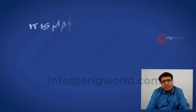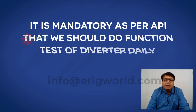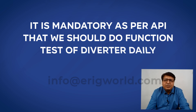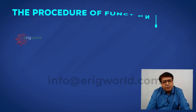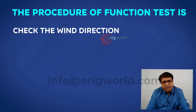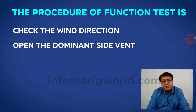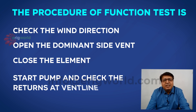It is mandatory as per API that we should function test the diverter daily. The procedure is: first, check the wind direction; then open the downwind side vent; close the element; start the pump; and check the returns at the vent line.